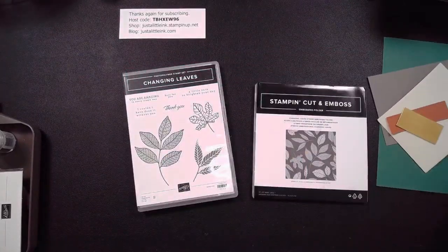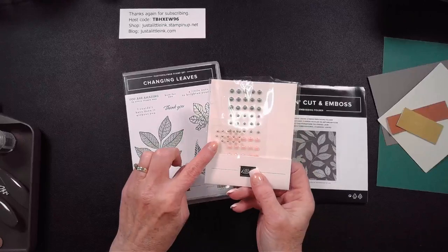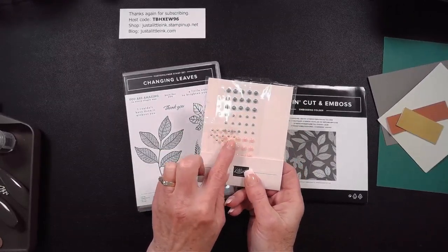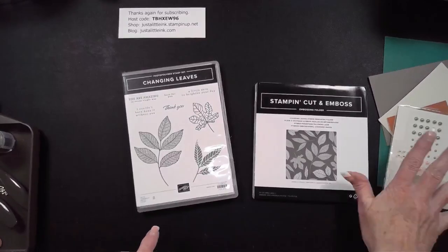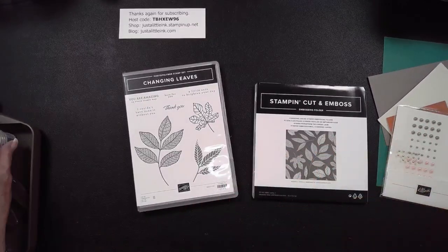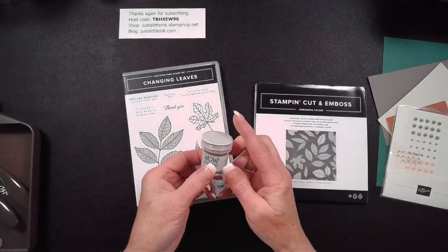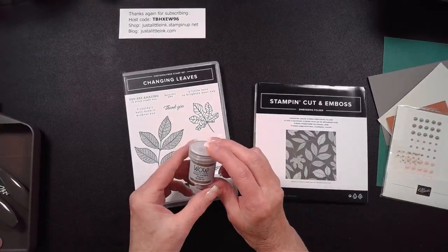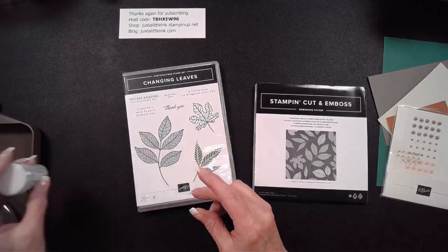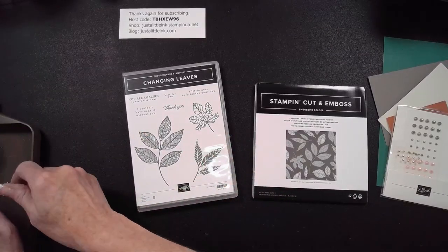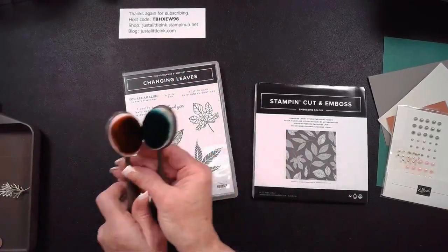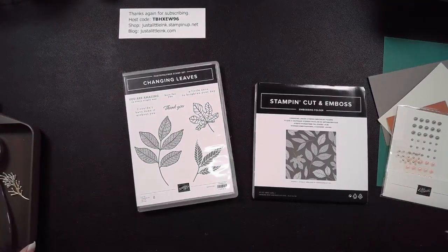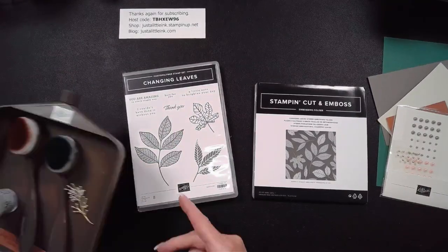I'm using some Blooming Pearls because they've got some beautiful gold pearls that are in here and I think they go with the colors I'm using. I'm going to be using our brand new Wow metallic embossing powders, this is the Gold Rich, and some blending brushes and the Stamp and Cut and Emboss machine.